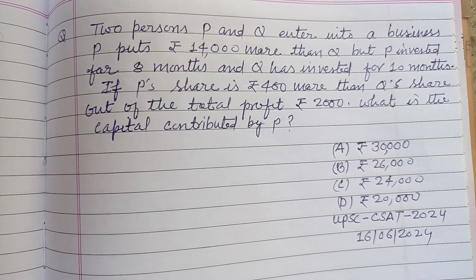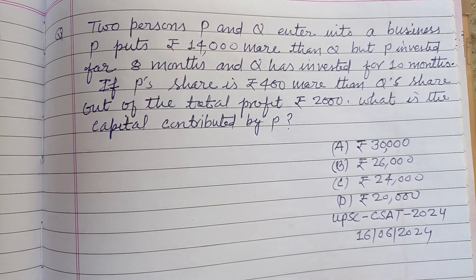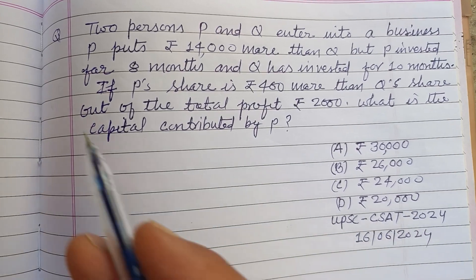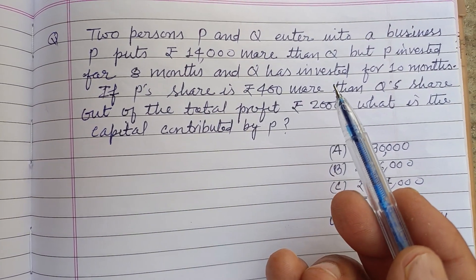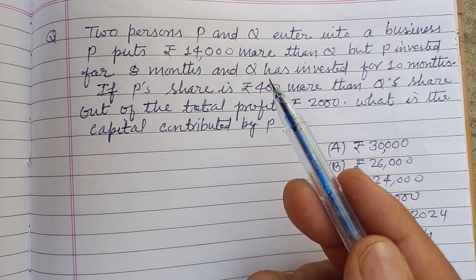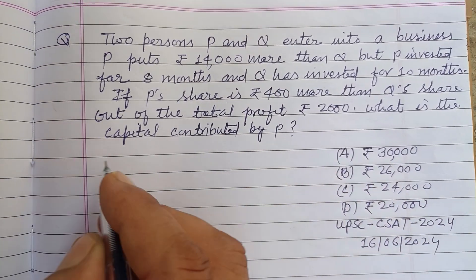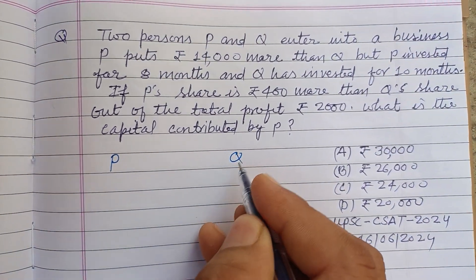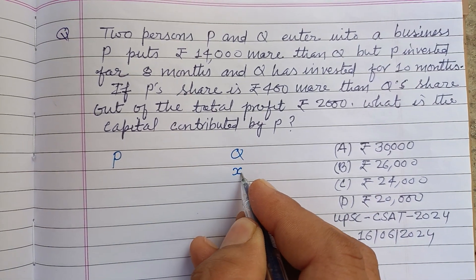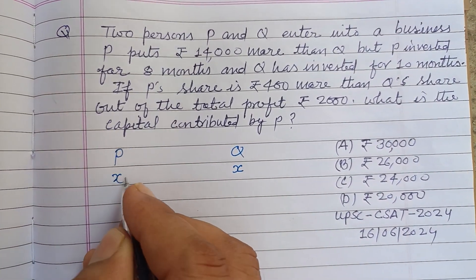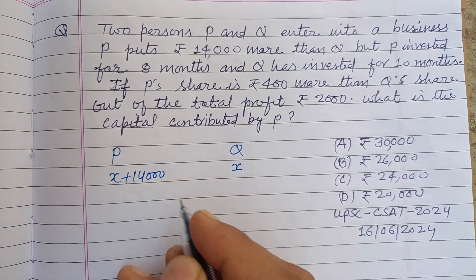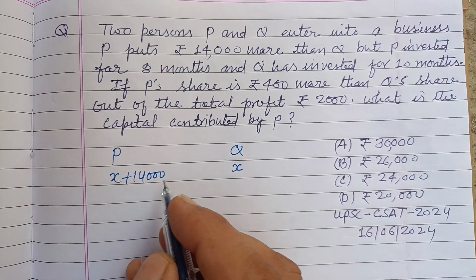Hello viewers, warm welcome to this YouTube channel. This question is from UPSC SET 2024. Two persons P and Q enter into a business. P puts 14,000 rupees more than Q. If Q invests x rupees, then P invests x plus 14,000.